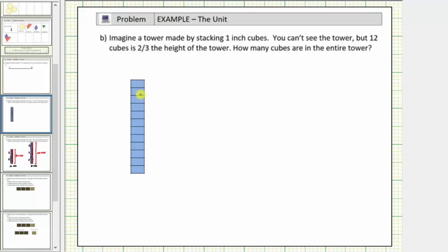So here are twelve cubes, so these twelve cubes would represent two-thirds the height of the entire tower. To help solve this problem, it helps to understand the meaning of two-thirds.